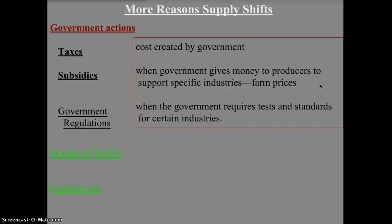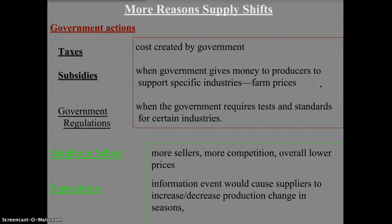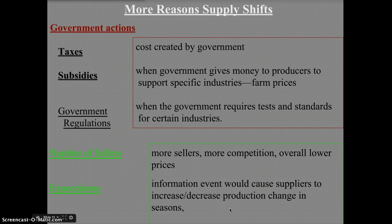Two other non-cost reasons cause supply shifts. First, the number of sellers: if a new company enters the market — say a sandwich shop — the overall supply goes up; if a bookstore closes, supply of books declines and shifts left. Second, expectations: a reasonable short-term anticipated event can change production. For example, ski wear companies ramp up production as winter approaches, while suntan lotion and swimsuit companies increase production heading into spring.